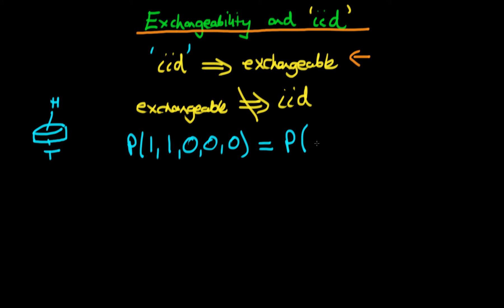as the probability of it first coming up tails, then it coming up heads, then it coming up tails, then it coming up heads, and then finally it coming up tails.